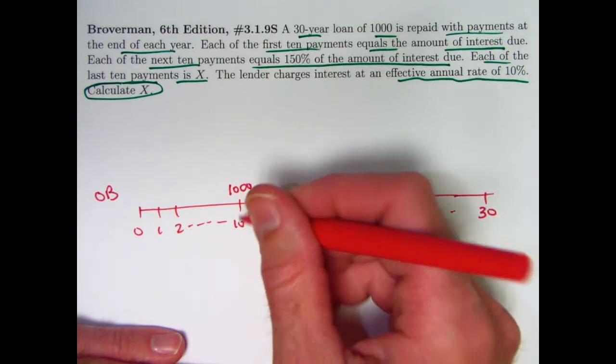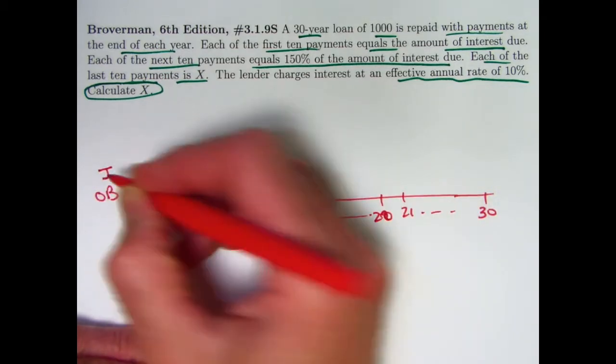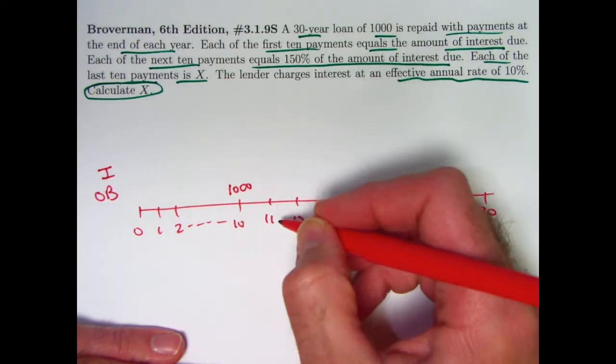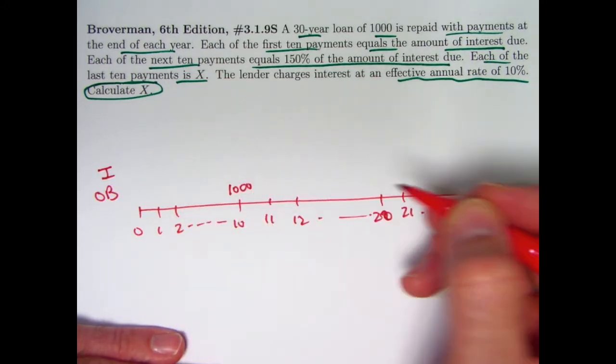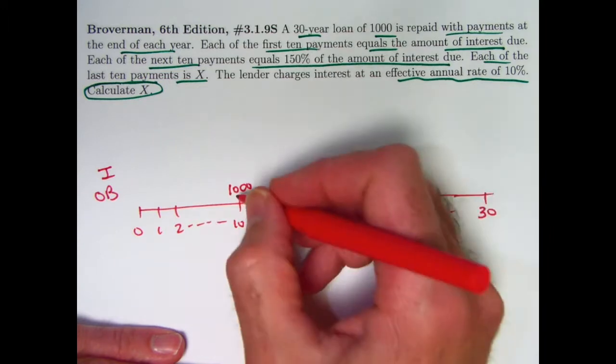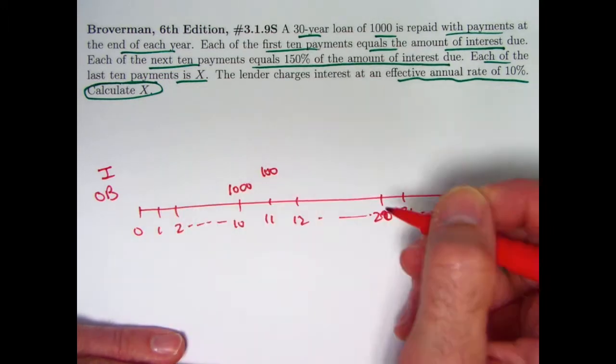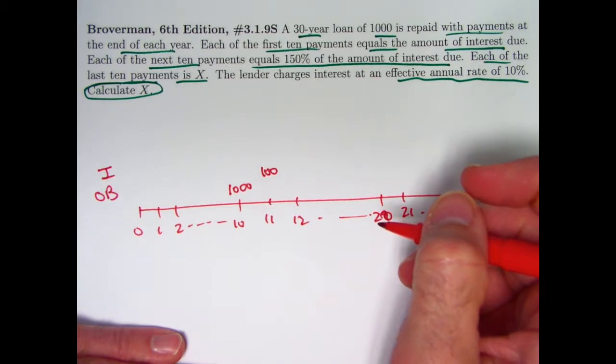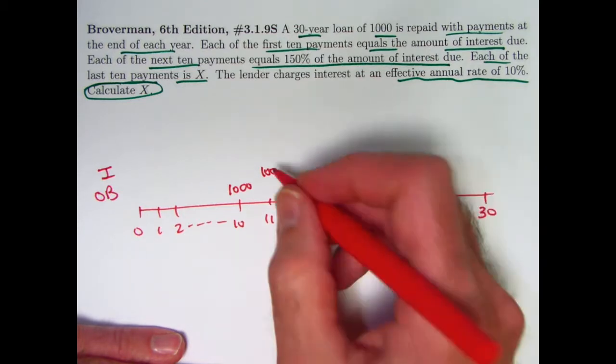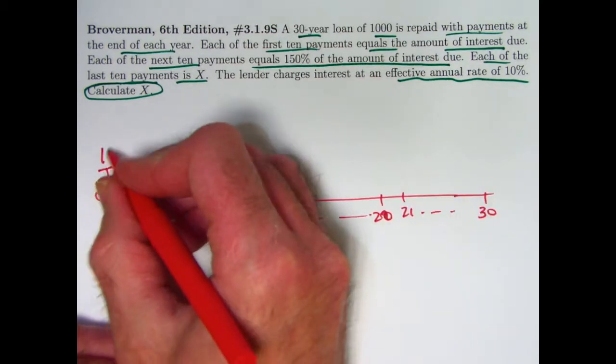Once we get to time 10, how much interest accrues during that next year from time 10 to time 11? Well, it's the same as accrued each of the first 10 years. 10% of 1,000 is 100. The payments those first 10 years were 100, and that will be the amount of interest due, but now as far as the payment amount,